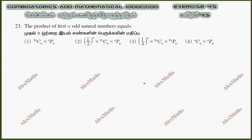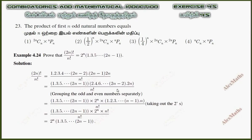Hi students, this is Alex here. The product of first n odd natural numbers equals — this is example 4.24. Prove that (2n)! divided by n! factorial equals this result. This is a direct use result, worth one mark internally.